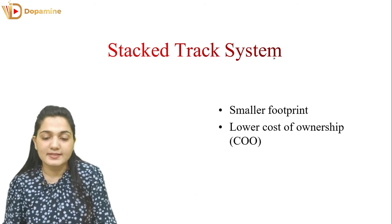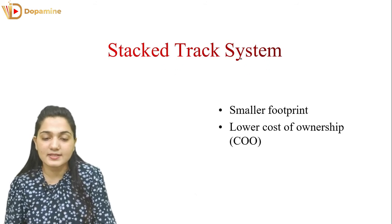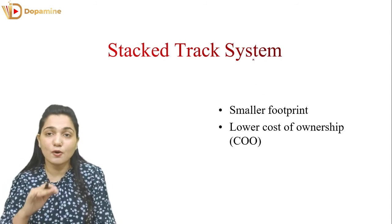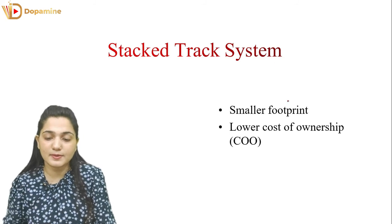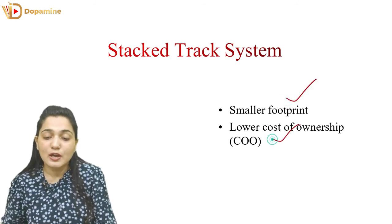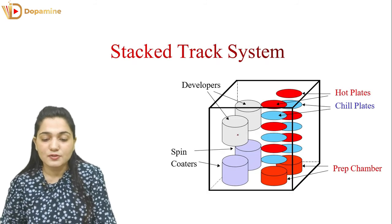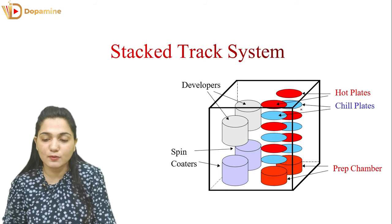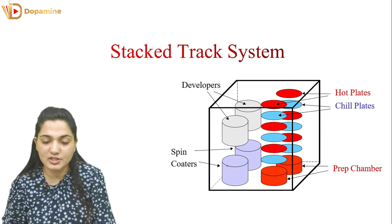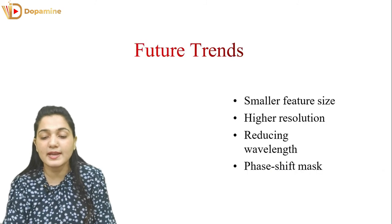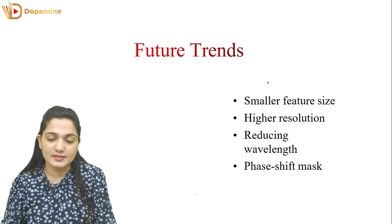The stacked track system is a system with tracks stacked over one another — one track on top of another — giving it a smaller footprint and lower cost of ownership. In this system, we have various hot plates, chill plates, the preparation chamber, spin coaters, and developers all stacked over each other to reduce the area occupied by the system.